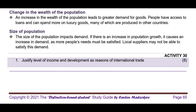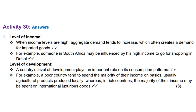Question 1: Justify level of income and development as reasons of international trade. 8 marks. Level of income: When income levels are high, aggregate demand tends to increase, which often creates a demand for imported goods. For example, someone in South Africa may be influenced by his high income to go shopping in Dubai.